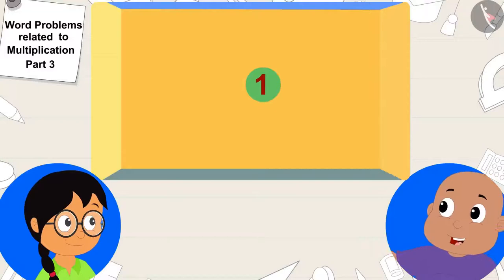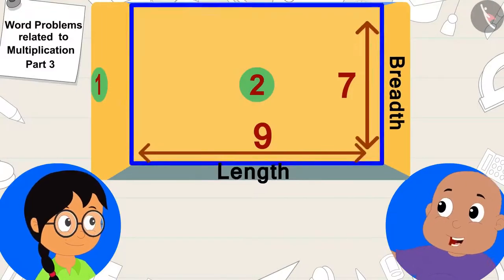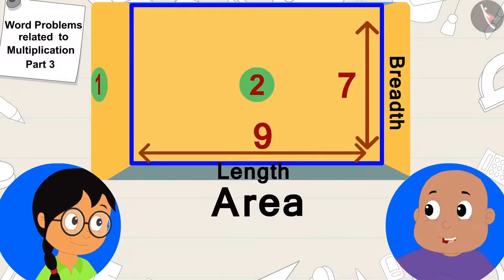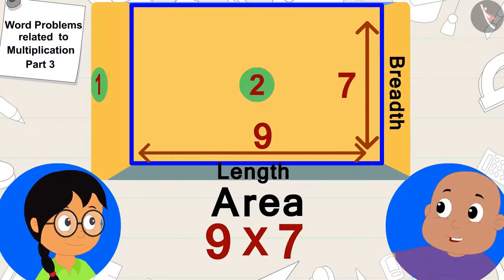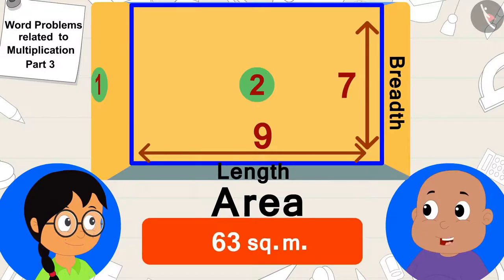Absolutely right. This wall is also rectangular. So, the area of this wall will be 9 times 7 or 63 square meters. Bablu told Meenu.